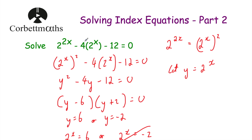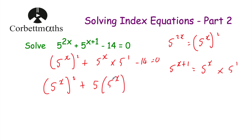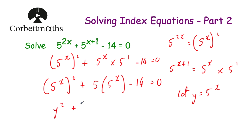So here we've got 5 to the power of x, all squared, plus 5 times 5 to the power of x, subtract 14 equals 0. Now we let y equal 5 to the power of x. That gives us y squared plus 5y subtract 14 equals 0. This is a nice quadratic we can solve.